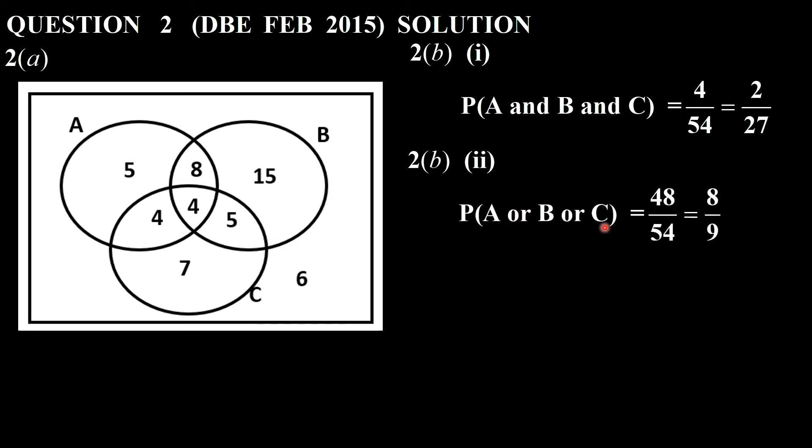Now we say A or B or C. So this is everything here except the 6. Quick way is 54 minus 6 is 48. 48 over 54. We simplify that, 8 over 9. You could also have said 5 plus 8 plus 15 plus 4 plus 4 plus 5 plus 7, but that would be much easier to do it by using a subtraction.